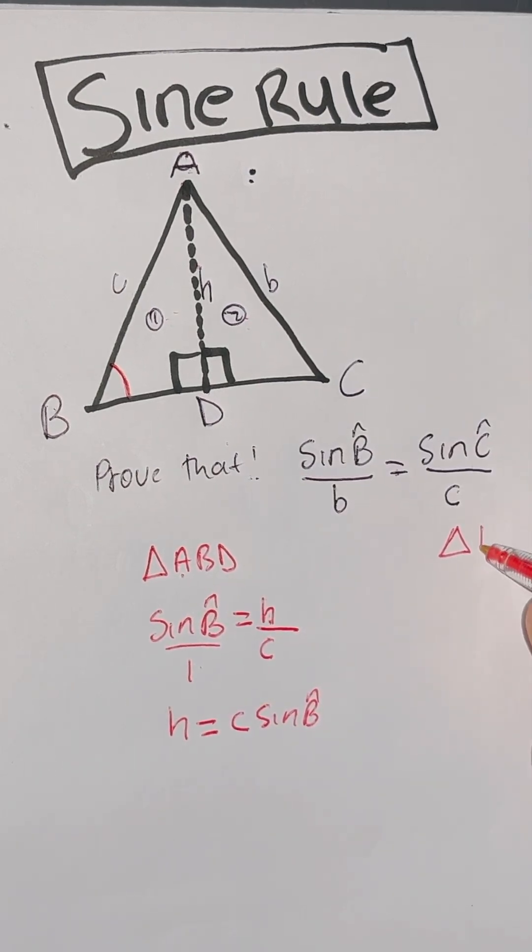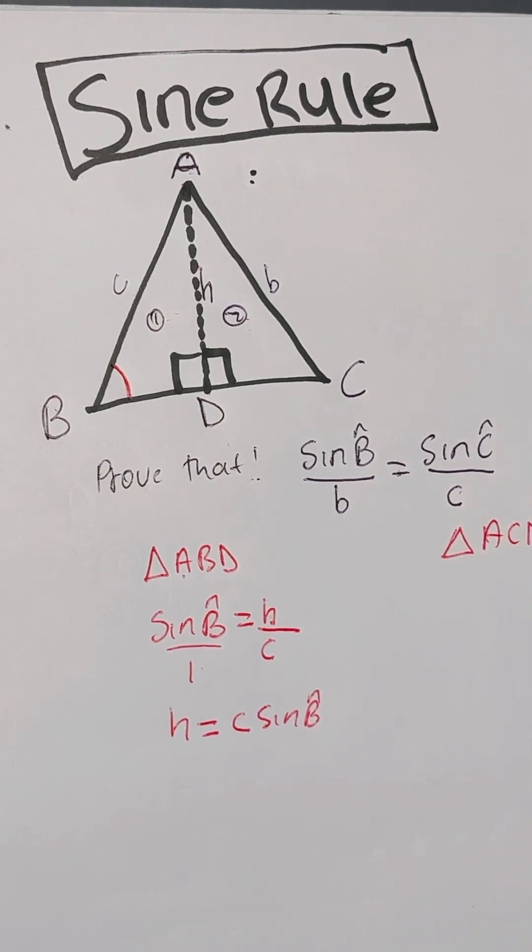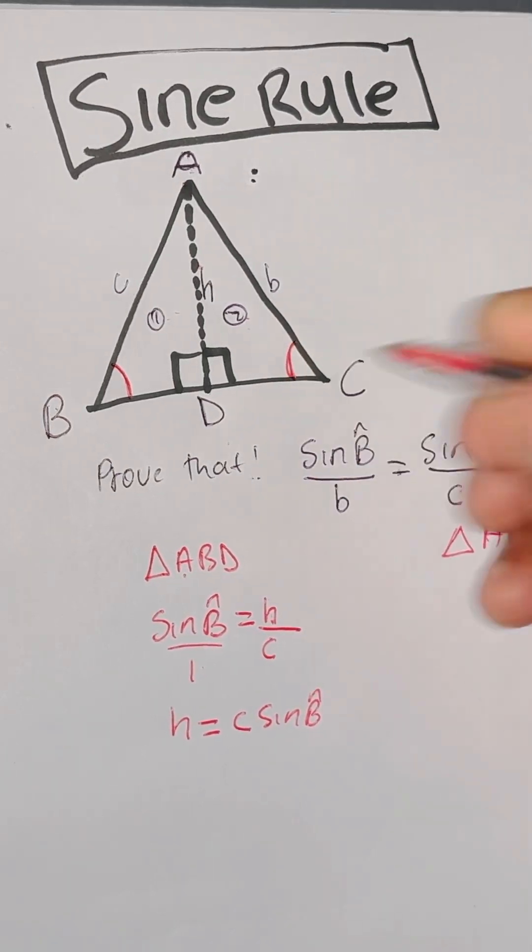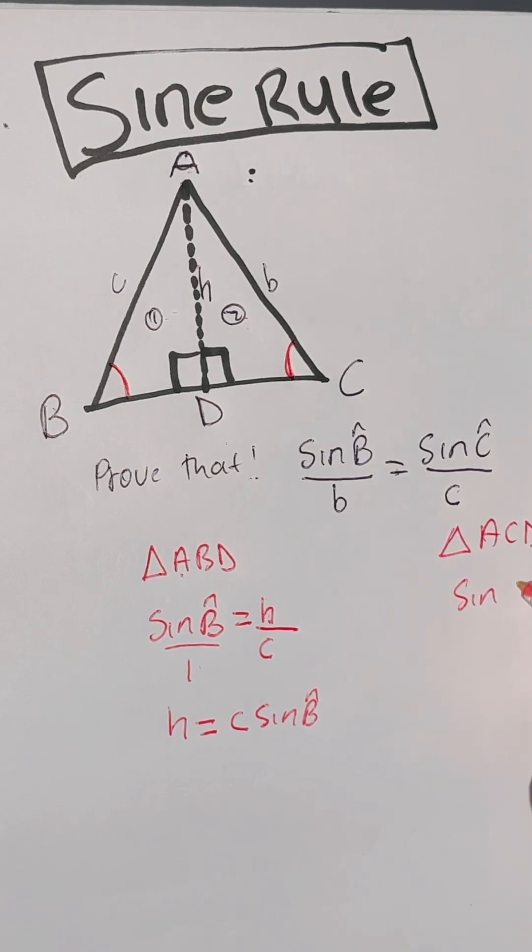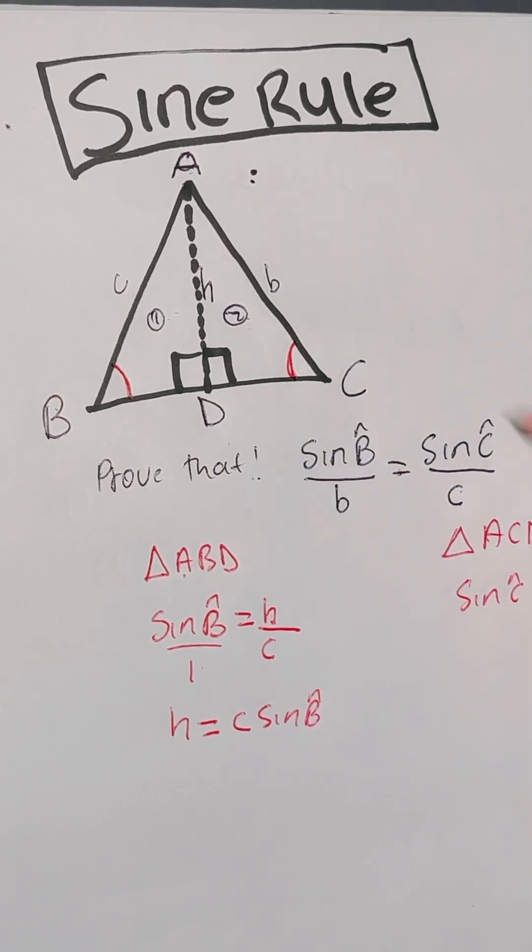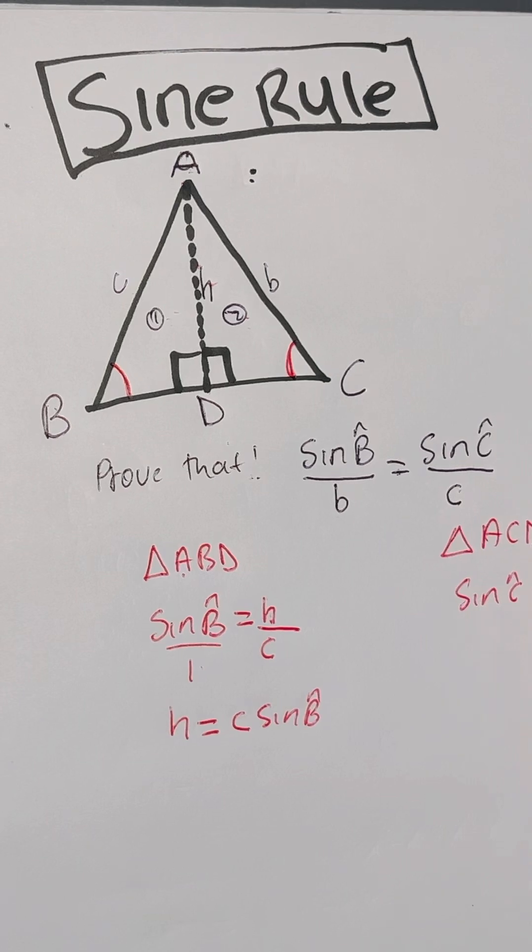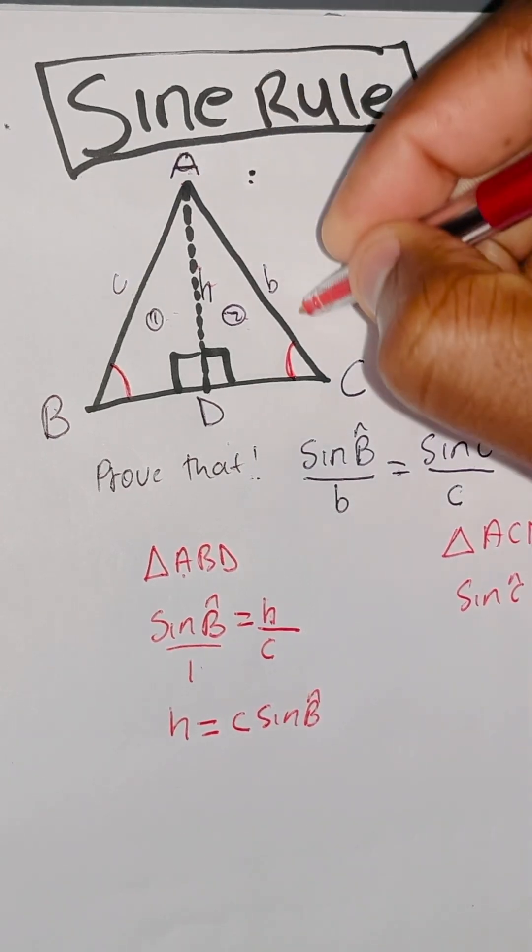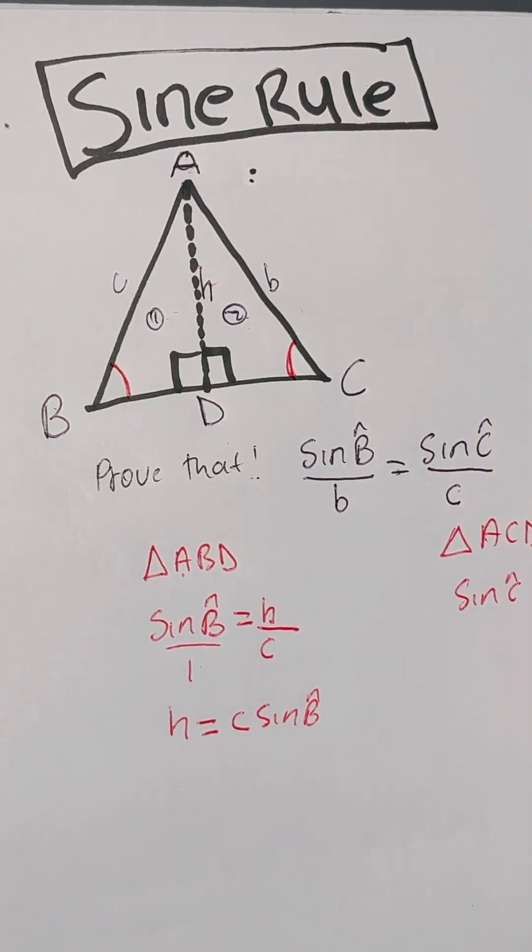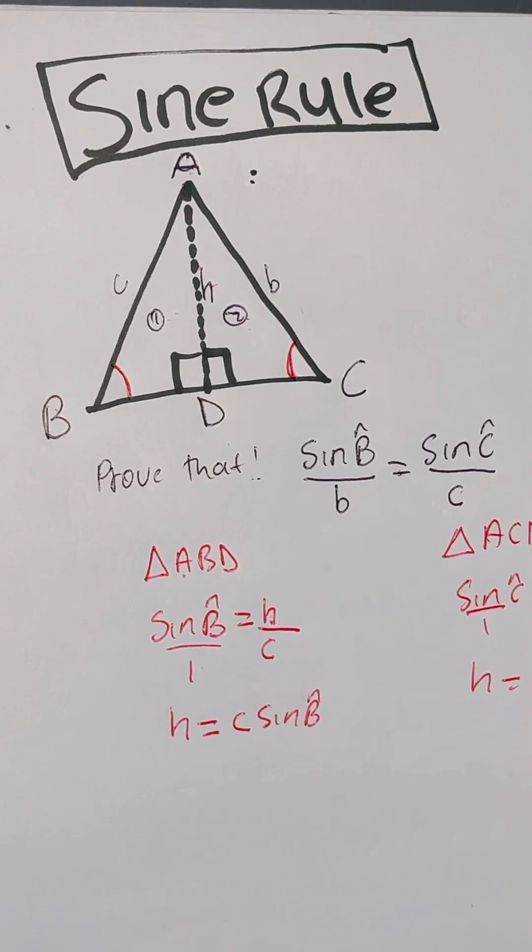In triangle ACD, sine angle C equals perpendicular height H divided by the hypotenuse B. And then you make H the subject, H equals B sine angle C.